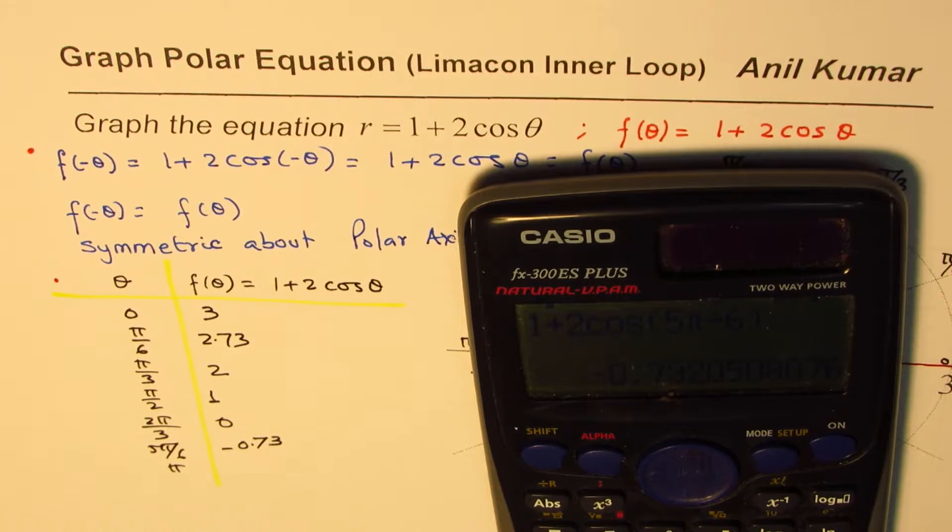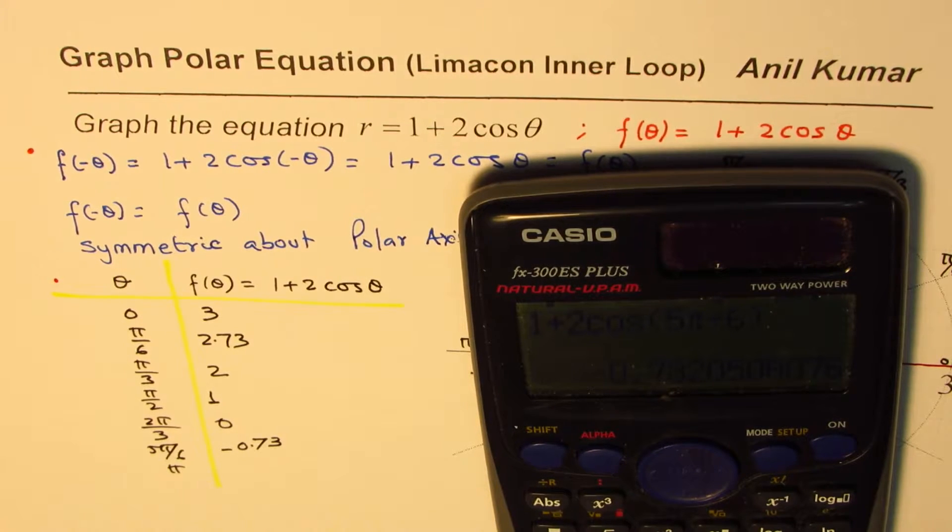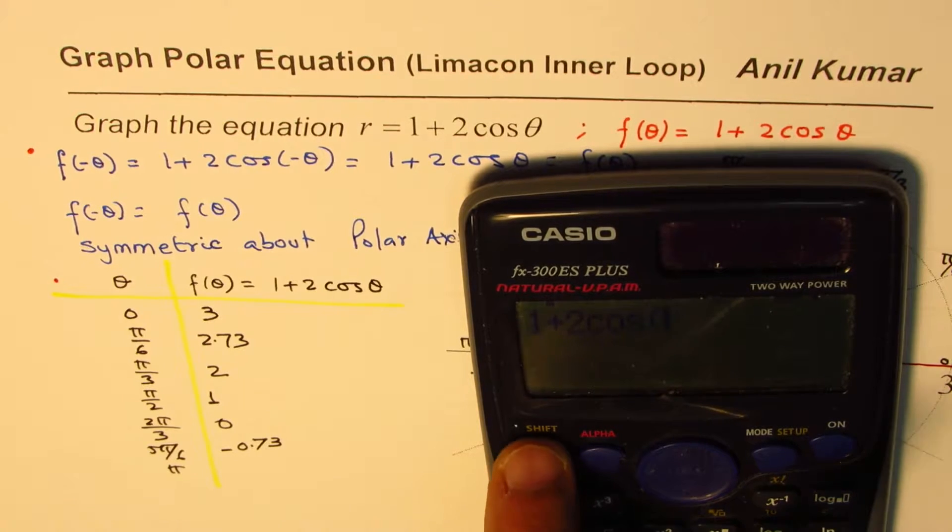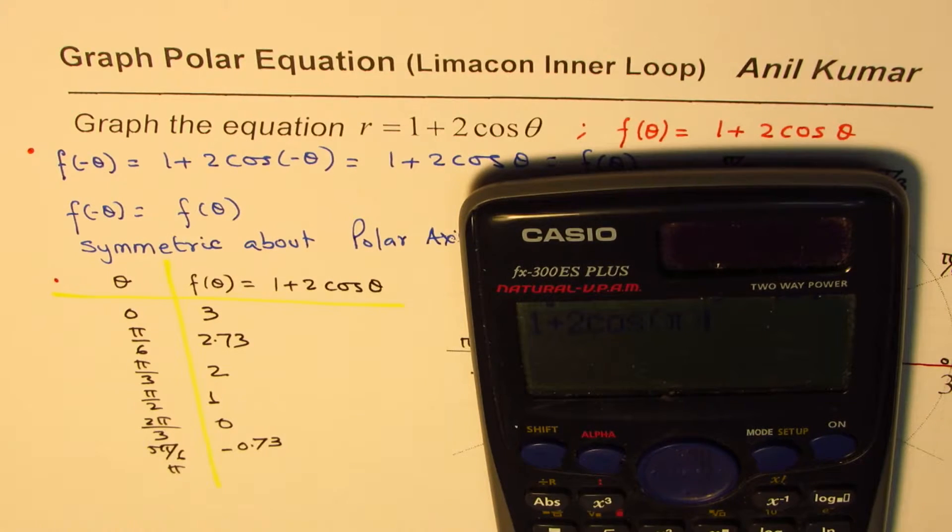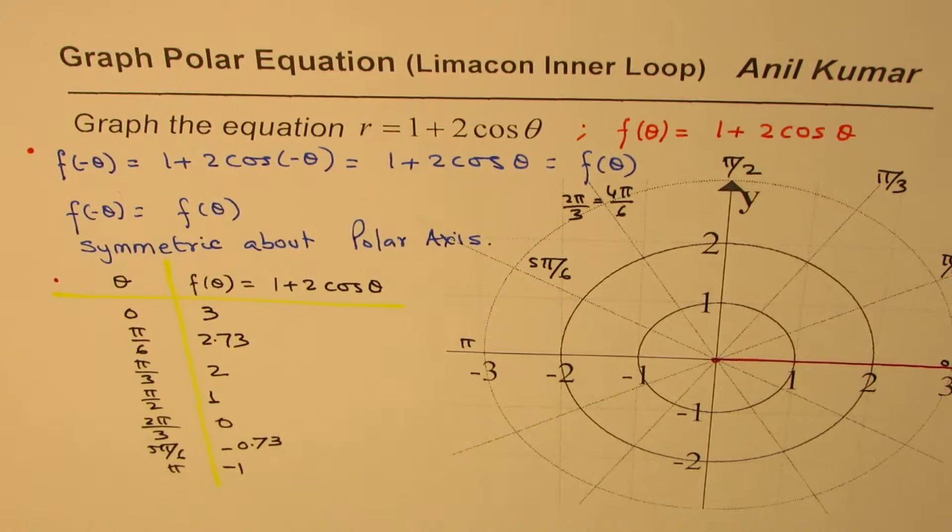And then we have 1 plus 2 times cos of pi. So cos of pi equals minus 1. So these two values are negative for us. We'll see how to plot them.